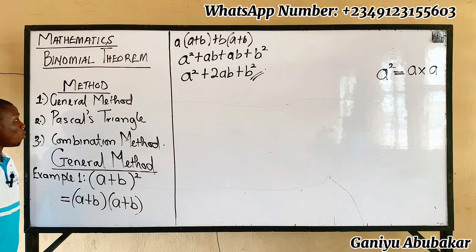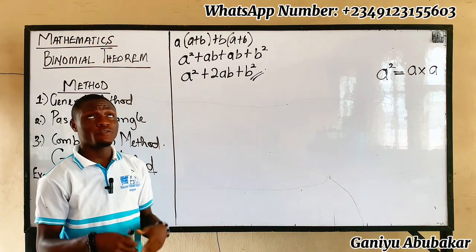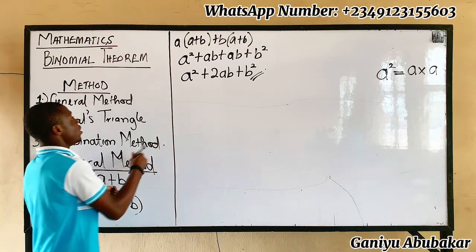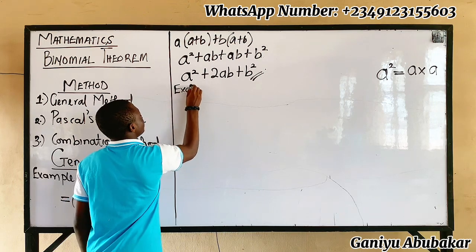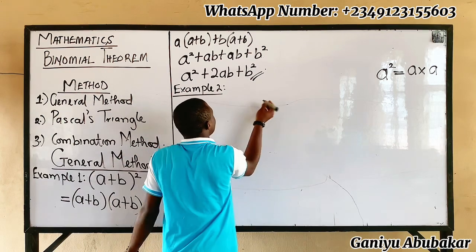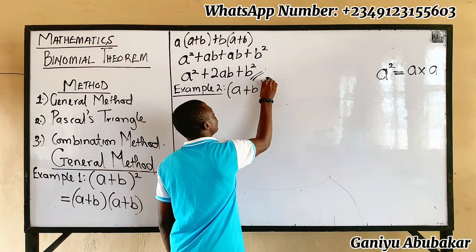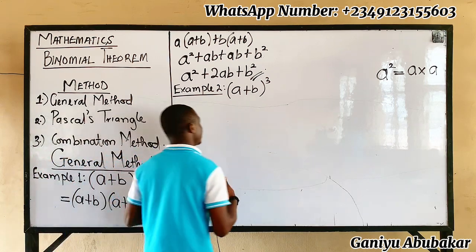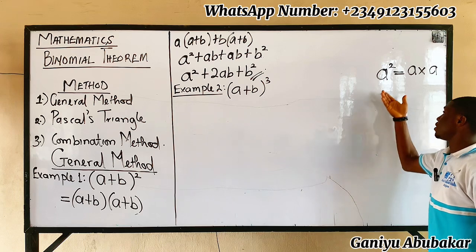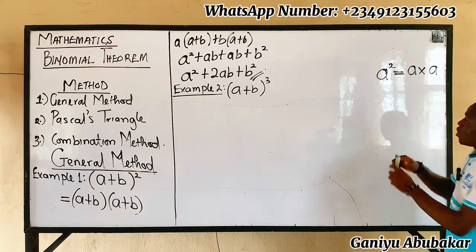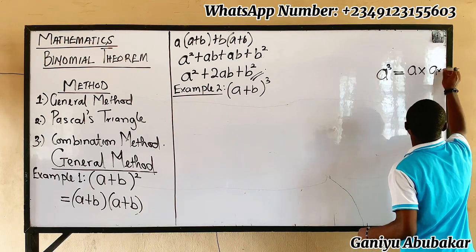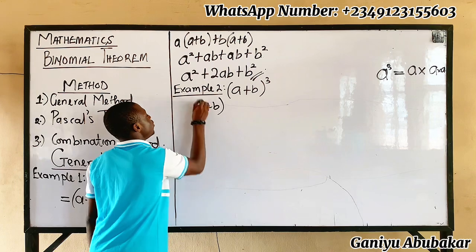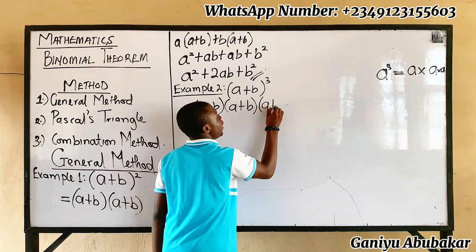That is the idea of the general method. Let's look at example two to further understand the in-depth concept. We're told to expand (a + b)³. We express it in terms of indices: (a + b)³ means (a + b) × (a + b) × (a + b), which is a plus b applied three times.